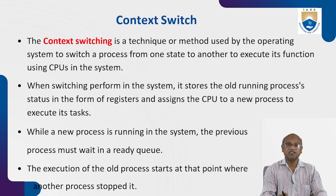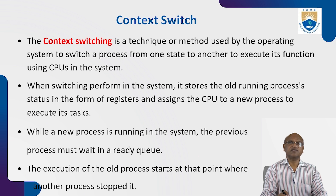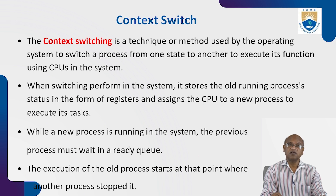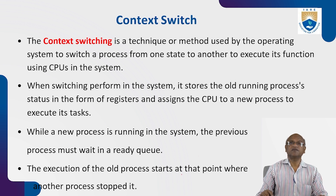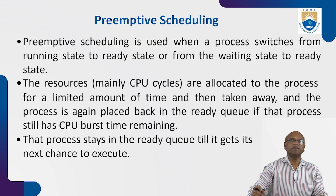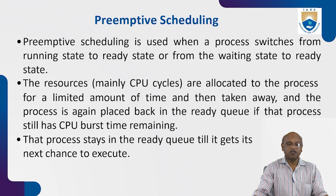While a new process is running, the previous process must wait in the ready queue. When the new process finishes, the old process resumes execution from the point where it stopped. This is called the context switch. Now we'll see what is scheduling — it is a program that decides which job should be sent to the CPU for execution.